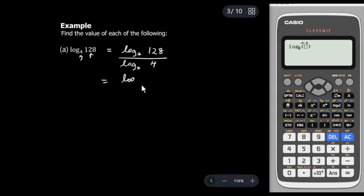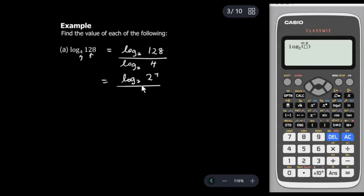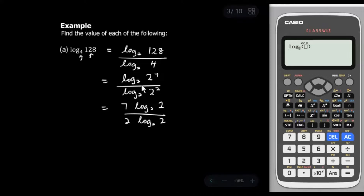We change 128 to base 2: 128 is 2⁷. At the bottom, 4 is 2². Bringing down the powers, we get 7 log₂2 over 2 log₂2. Since log₂2 = 1, both the top and bottom simplify, giving us 7 over 2. So the answer is 7/2.